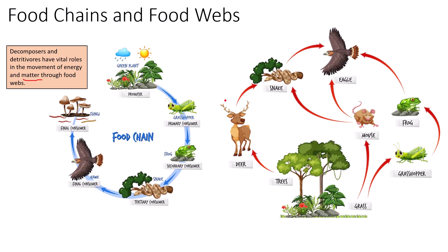The snake eats the mouse and the deer, so the snake is eating at the secondary consumer level. In the left food chain, the snake was eating at the tertiary consumer level. So depending on what the snake eats: if it eats directly from the mouse, it's at the secondary consumer level; if the grasshopper is eaten by the frog and the snake eats the frog, it's at the tertiary consumer level. If the eagle eats the snake which ate the frog which ate the grasshopper, the eagle is at the quaternary consumer level. However, if the eagle eats directly from the mouse, it drops to the secondary consumer level.